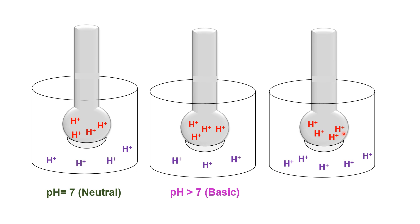If the number of hydrogen ions inside the probe is less than the number outside the probe, there is a difference, and that difference will be recorded as an acidic solution with pH less than 7.